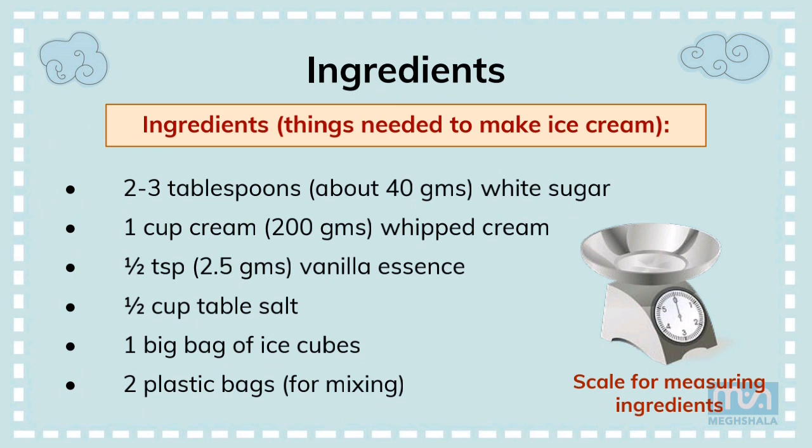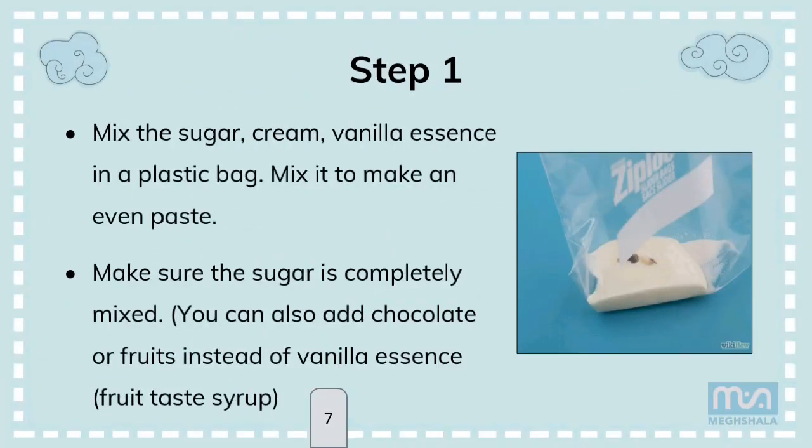Now let us look at the steps of making ice cream. Step 1: Mix the sugar, cream, and vanilla essence in a plastic bag. Mix it to make an even paste. Make sure the sugar is completely mixed. You can also add chocolate or fruit instead of vanilla essence — fruit taste syrup is available in the market and can be added as a substitute.